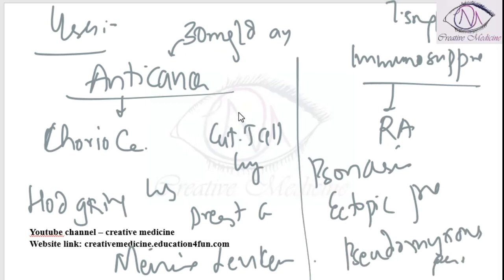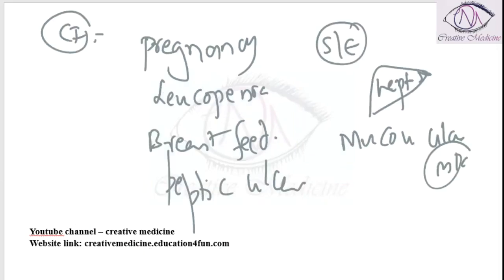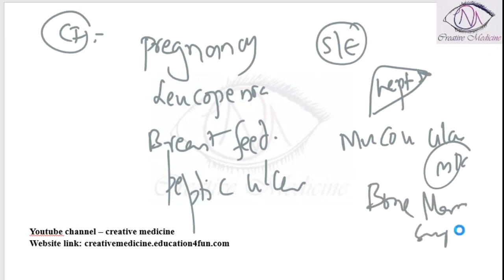Methotrexate is the drug of choice and the most commonly used DMARD. Its side effects include hepatotoxicity, bone marrow suppression, and hepatic fibrosis.